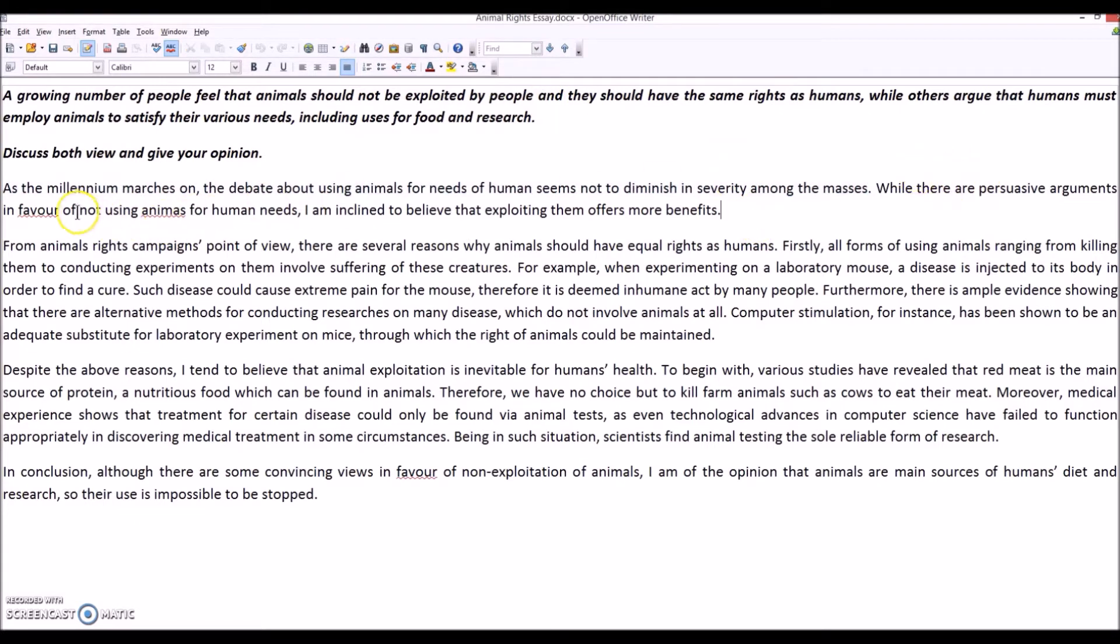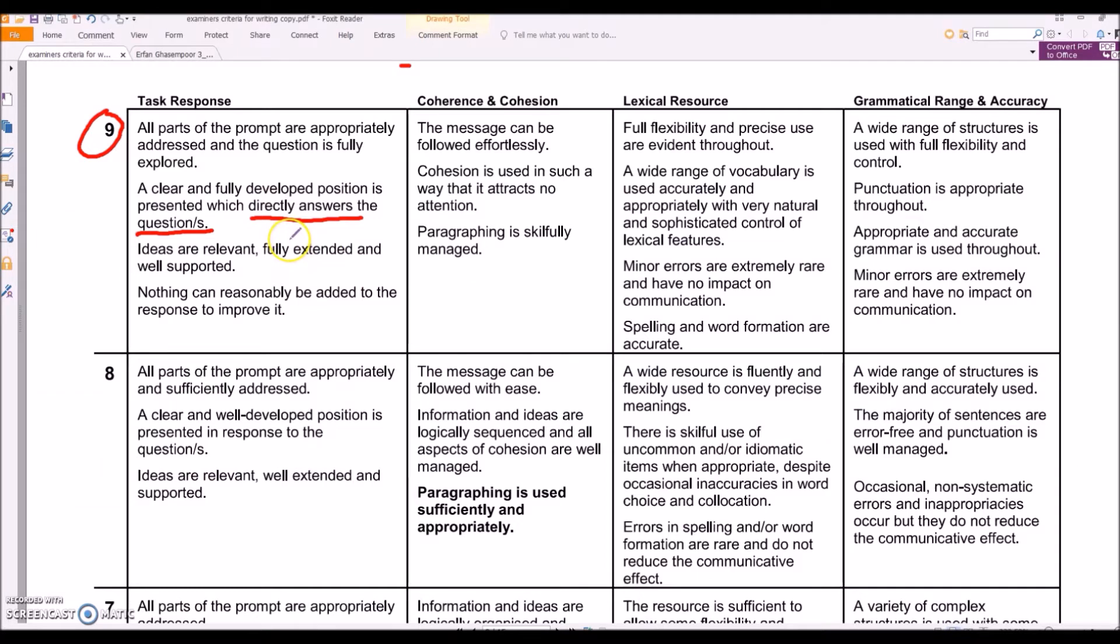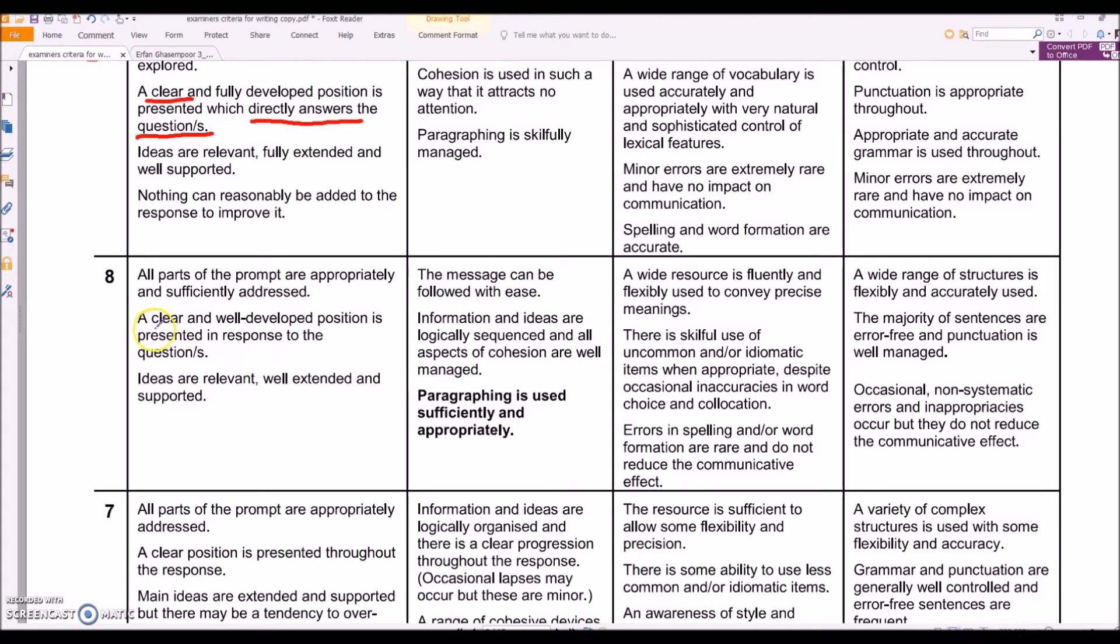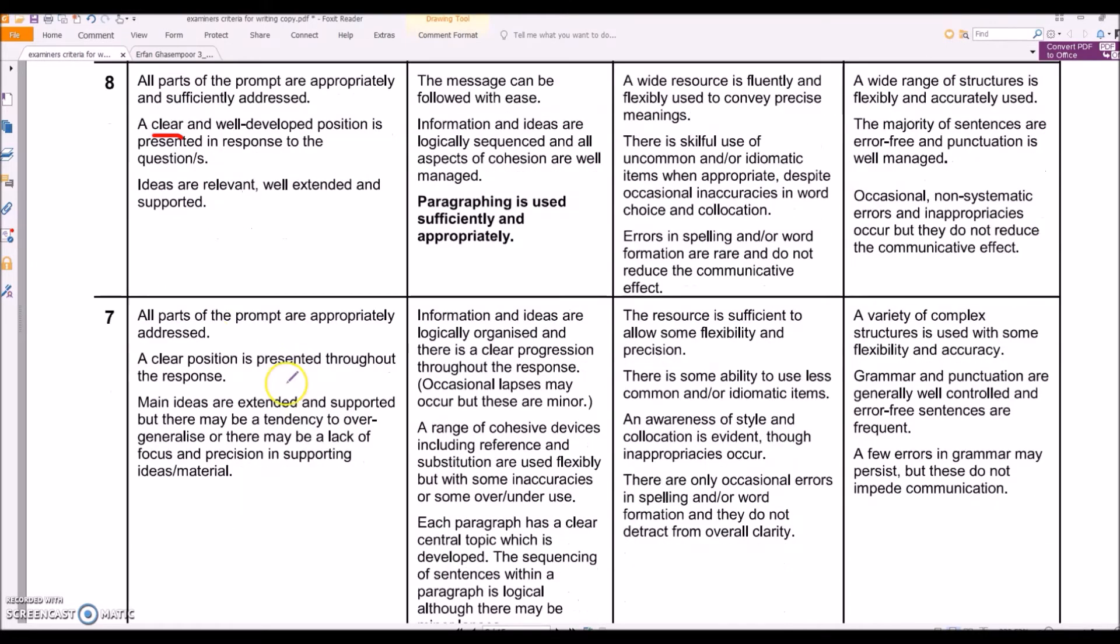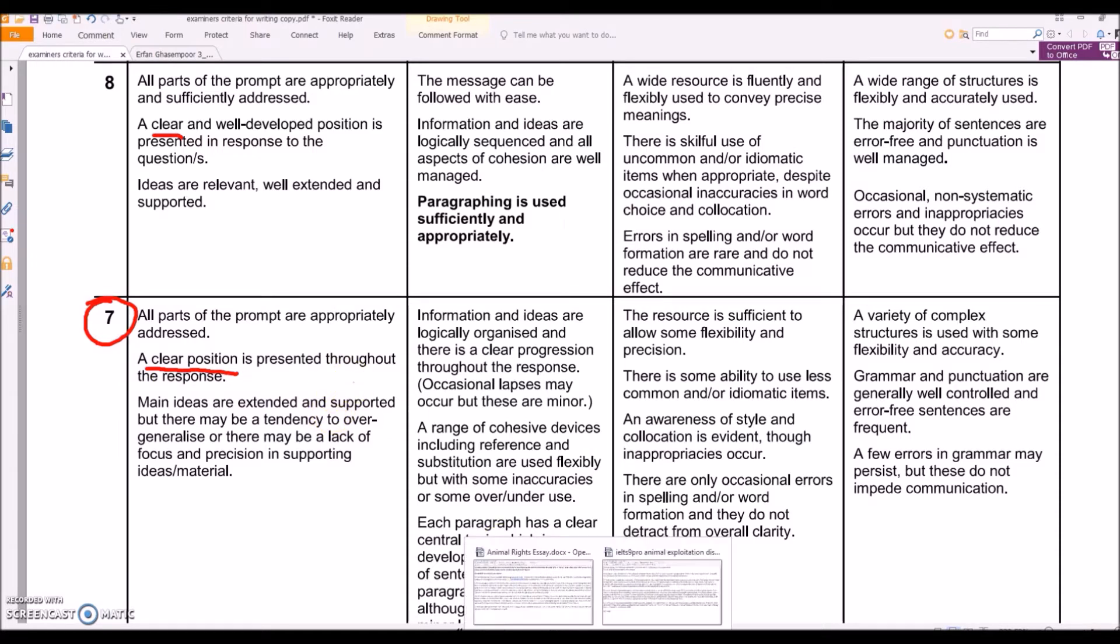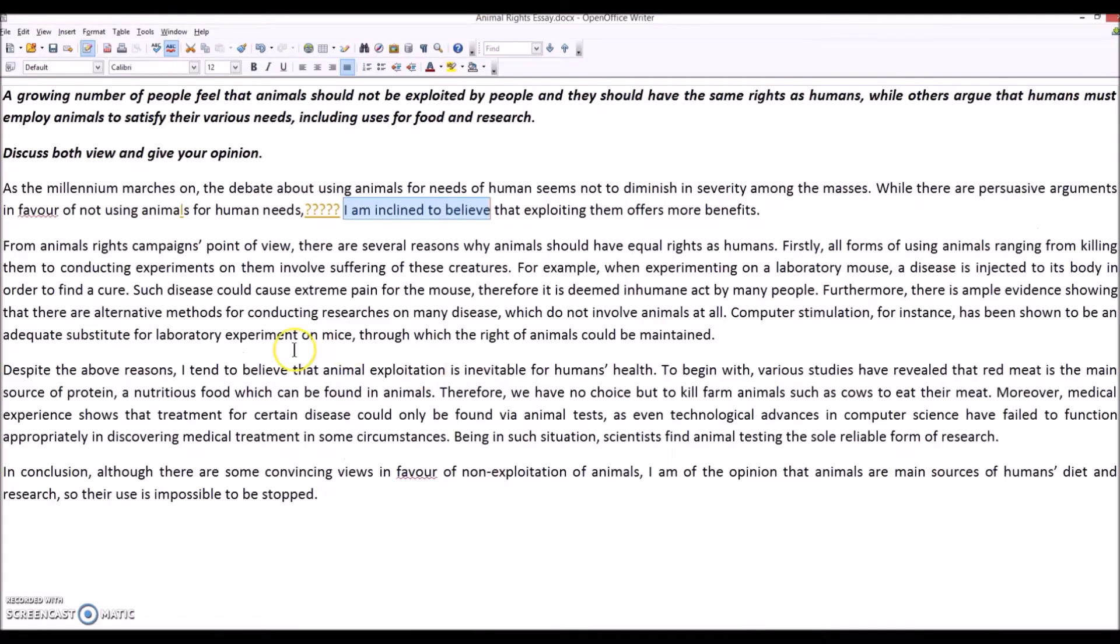While there are persuasive arguments in favor of not using animals for human needs, which are what? Exactly. I am inclined to believe. Now is that a clear position? I'm inclined to believe, but maybe I'm not inclined. What does it mean? Simply say I agree, I disagree, in my opinion, in my view, right? Direct and clear. These are the key words, direct and clear. It's clear. This is what I think. This is what I'm going to say. This is what I'm going to talk about. So if we look at seven, a clear position.